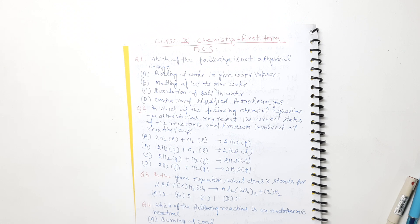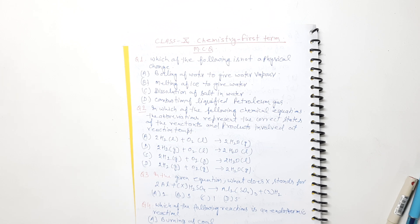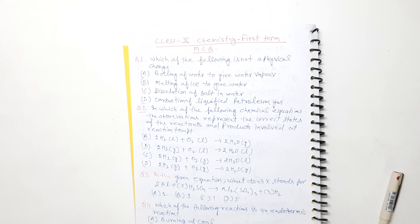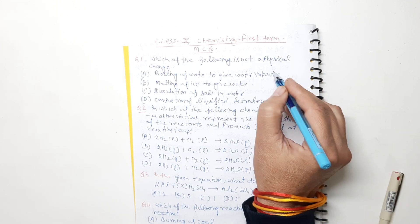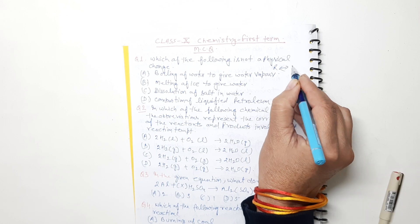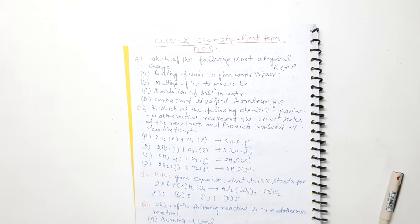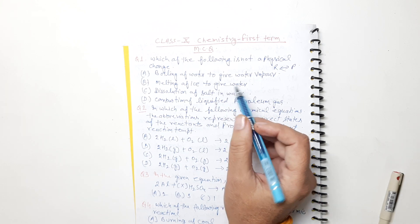Which of the following is NOT a physical change? Now, those who know the difference between physical change and chemical change will do this very quickly. A physical change is one in which a reversible reaction takes place — meaning reactants can form products and products can revert back to reactants. Such a reaction is called a physical change.